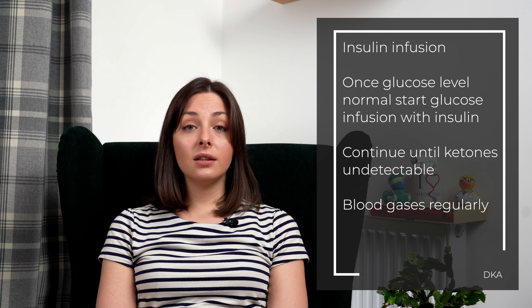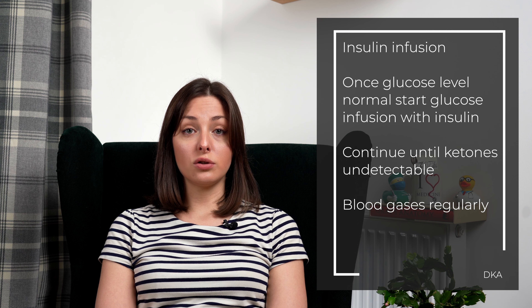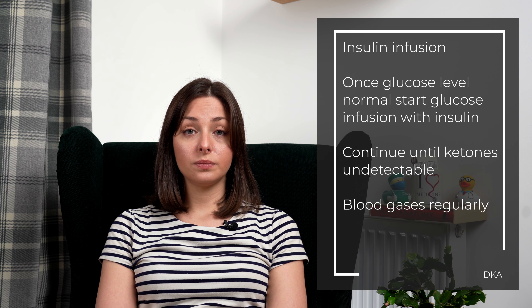Your patients will need regular venous blood gases to check that their pH is coming back to a normal range, to check their ketones are normalising and to check that their glucose is under control. Don't forget to look for an underlying cause for your patient going into DKA, to speak to the community diabetes team, and to continue your patient's long-acting insulin if they're taking it. This is really important so that they can go back to eating and drinking and taking subcut insulin as normal, as soon as possible.